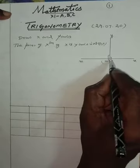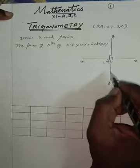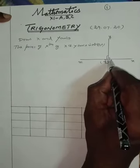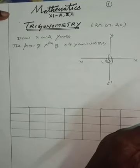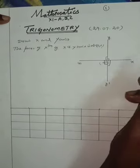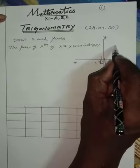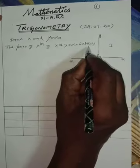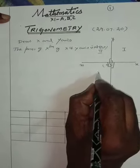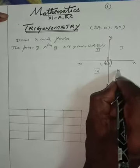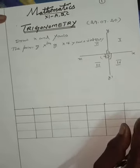This is also 90 degrees. X-dash O, Y-dash is 90 degrees. Y-dash O, X is 90 degrees. There are four quadrants: the first quadrant, second quadrant, third quadrant, and fourth quadrant.